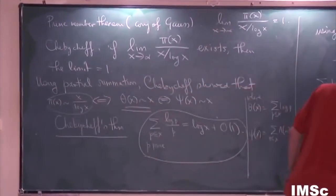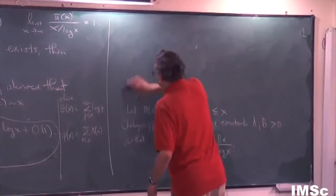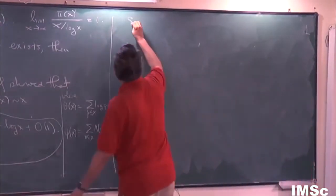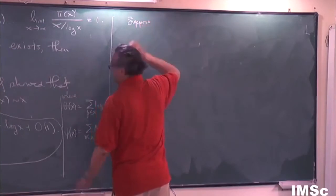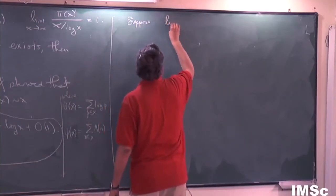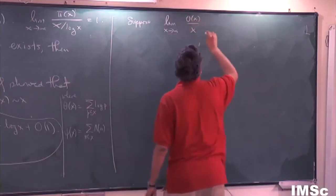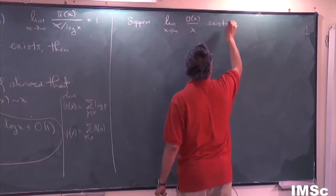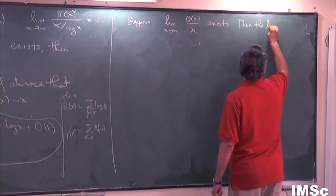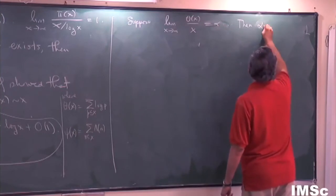So let's try to show if the limit exists, the limit is one. Suppose—so what I'm trying to say is, suppose, let's prove the following theorem. So suppose, and this is probably a good exercise in how analytic number theory works, so I'll do a little bit of it. Suppose the limit as x goes to infinity of θ(x) over x exists. Then the limit is one. Then α equals one.